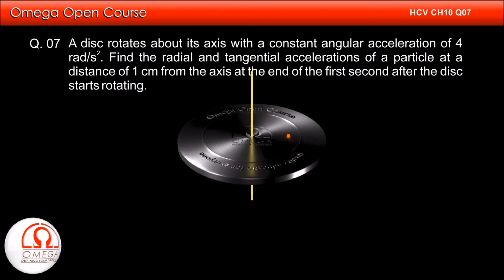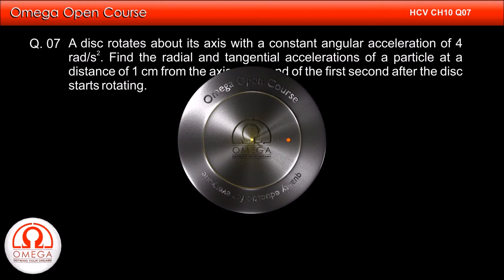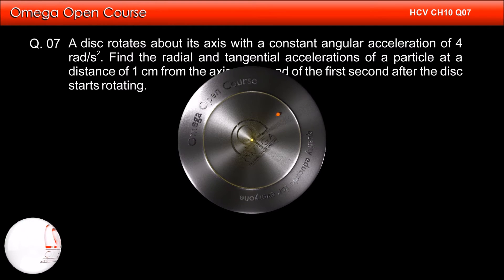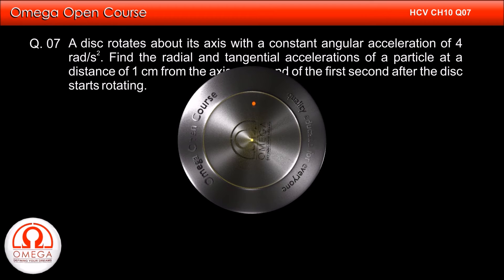A disk rotates about its axis with a constant angular acceleration of 4 radians per second square. Find the radial and tangential accelerations of a particle at a distance of 1 cm from the axis at the end of the first second after the disk starts rotating.